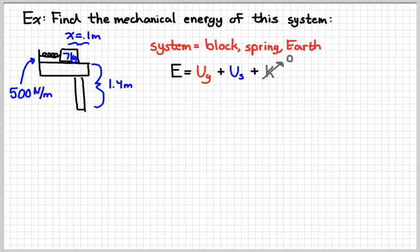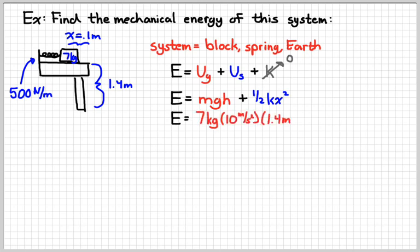Now since the thing is not moving, kinetic energy in this case would be zero. It doesn't mean that always has to be true. And so I can find the gravitational potential energy from the mgh equation. I can find the energy in the spring from the one-half kx squared equation, and then just substitute in the numbers.